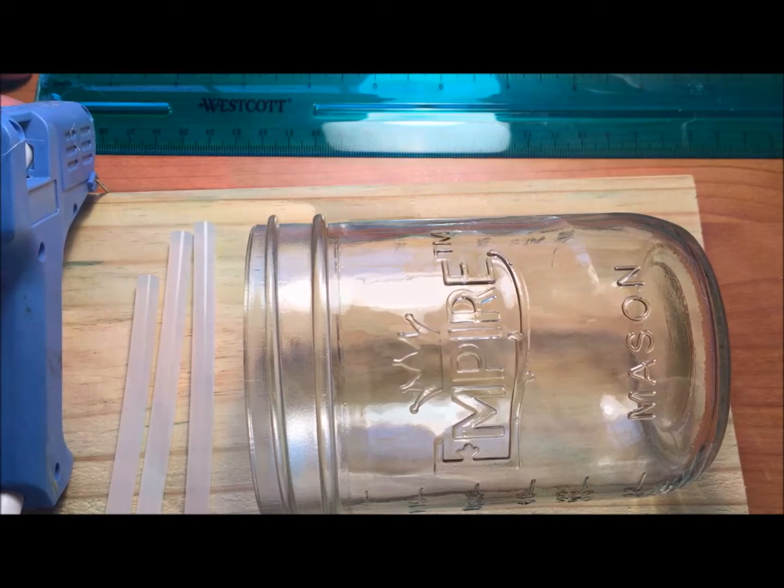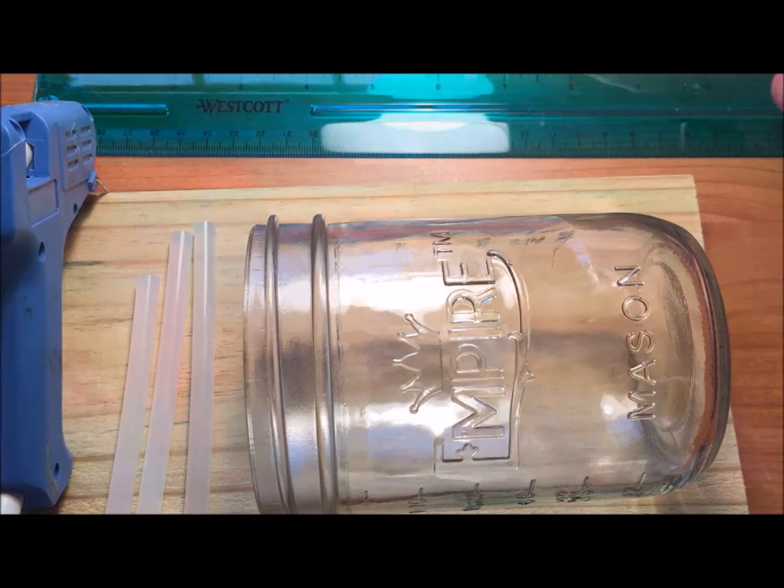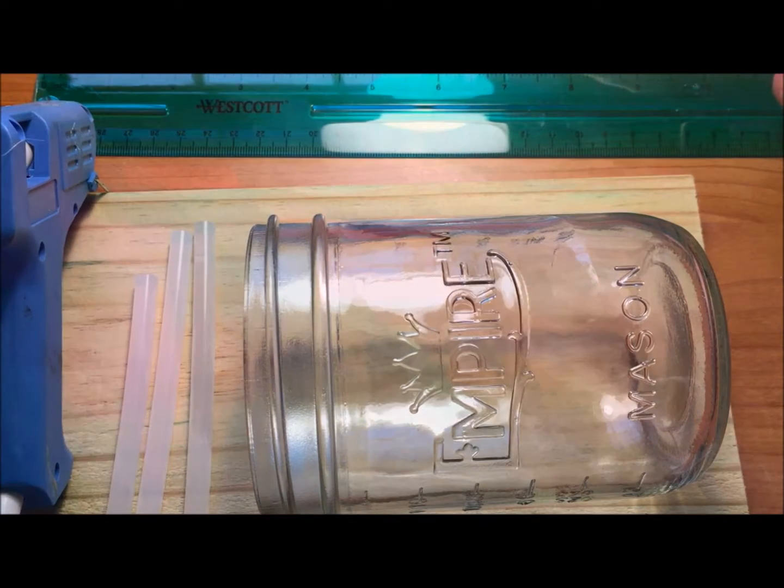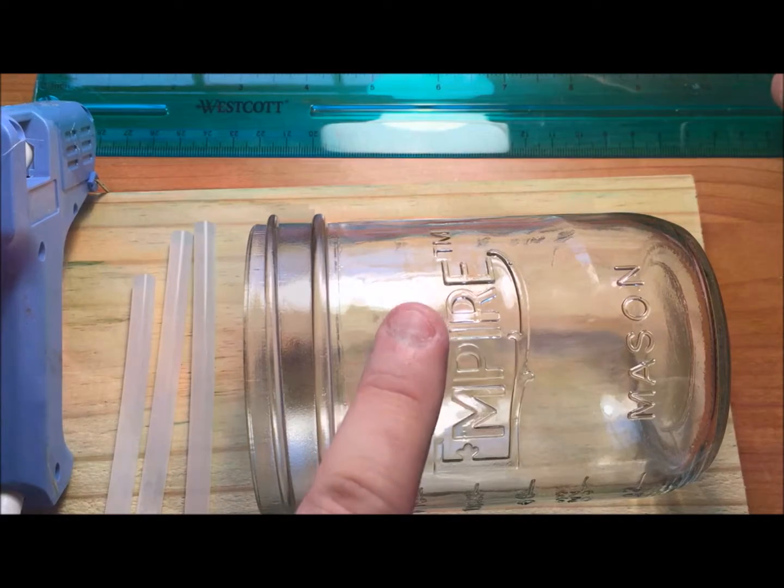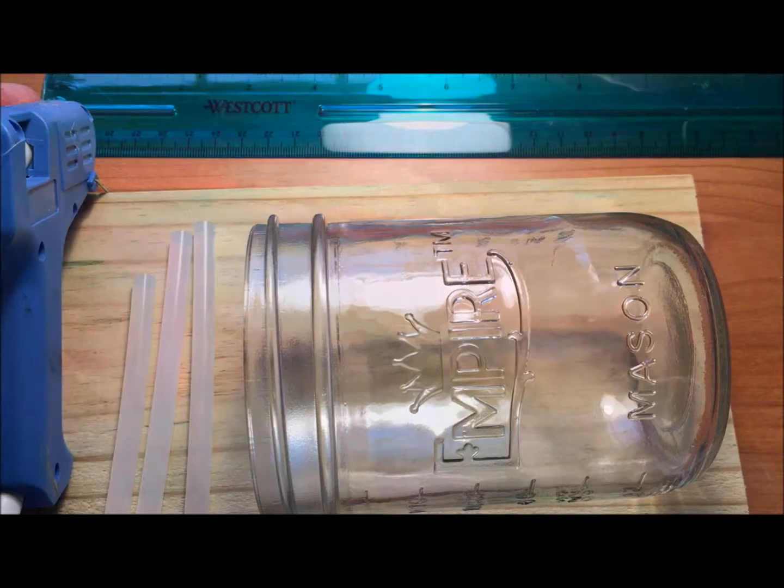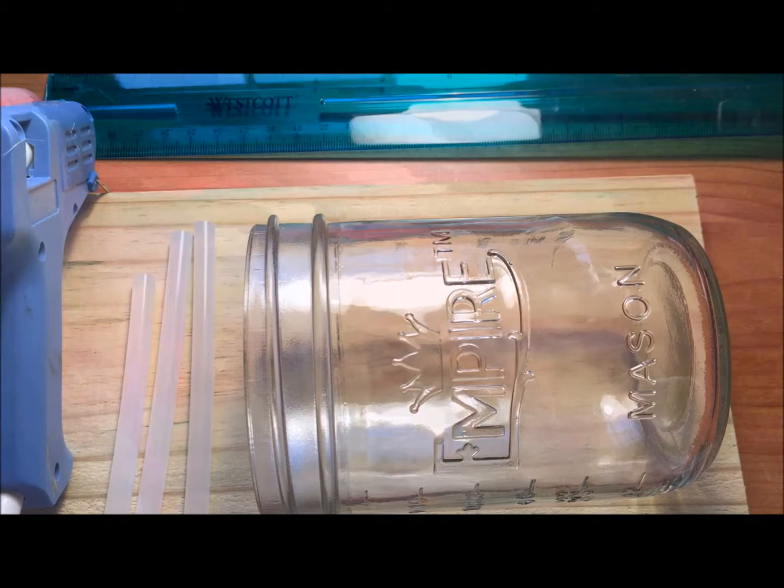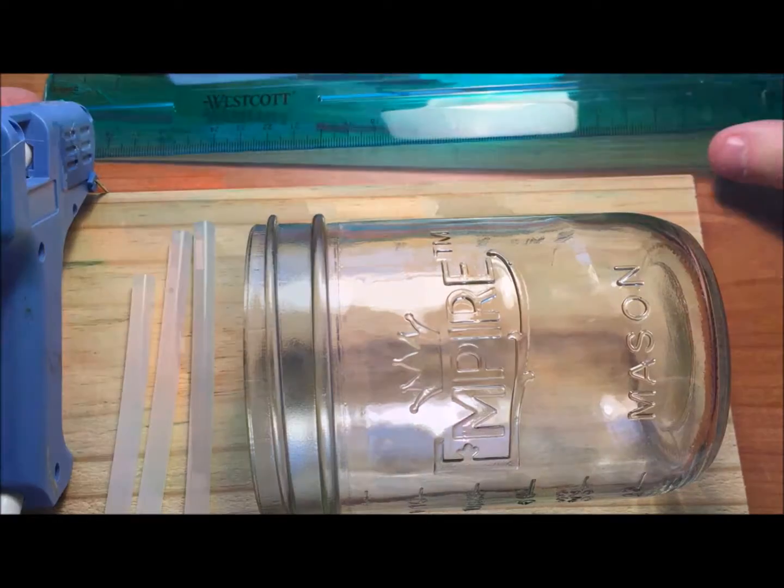These are the components required to build the rain gauge. I have a ruler, a hot glue gun, a couple of hot glue sticks, a mason jar, and a block of wood. Let me describe these components in more detail so you can see what to look for when picking components.